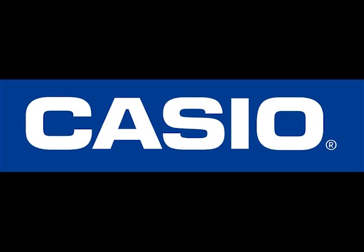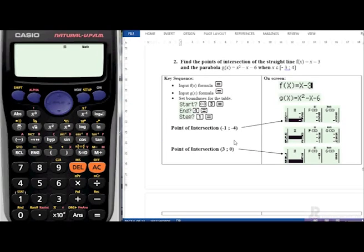Hi, this is Astrid from James Ralph with a quick how-to on finding the points of intersection of a straight line and a parabola on the Casio FX-82ZA+.